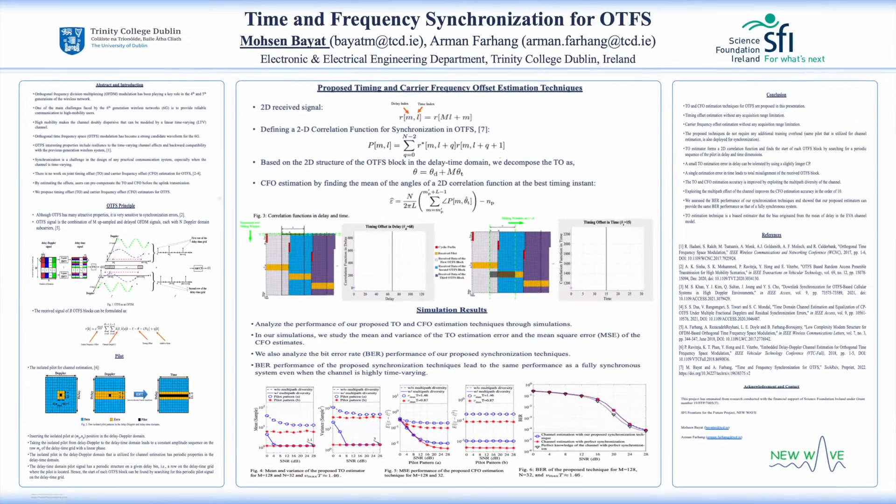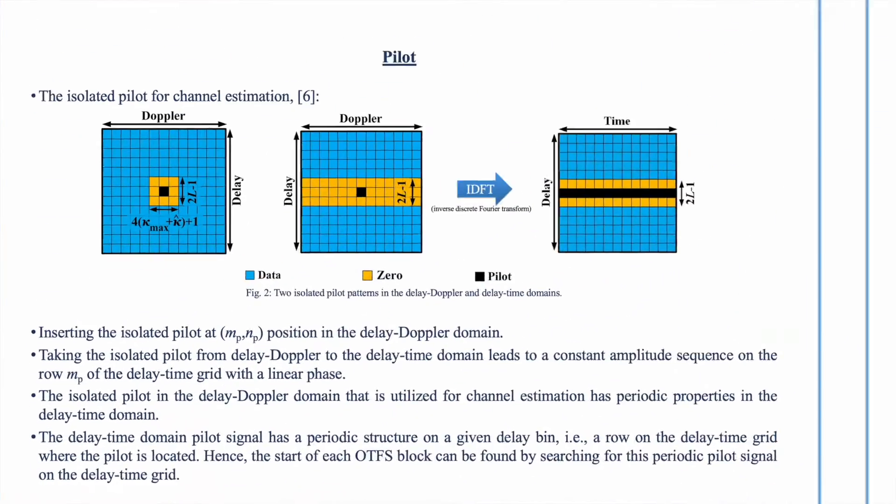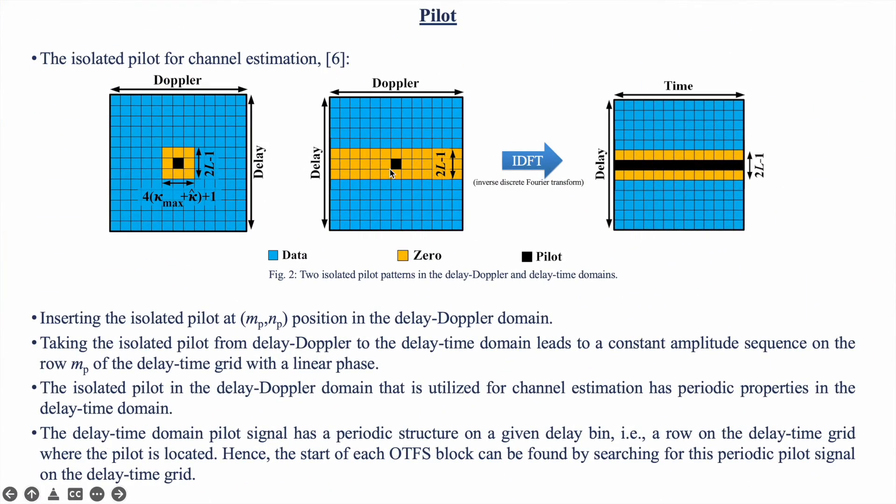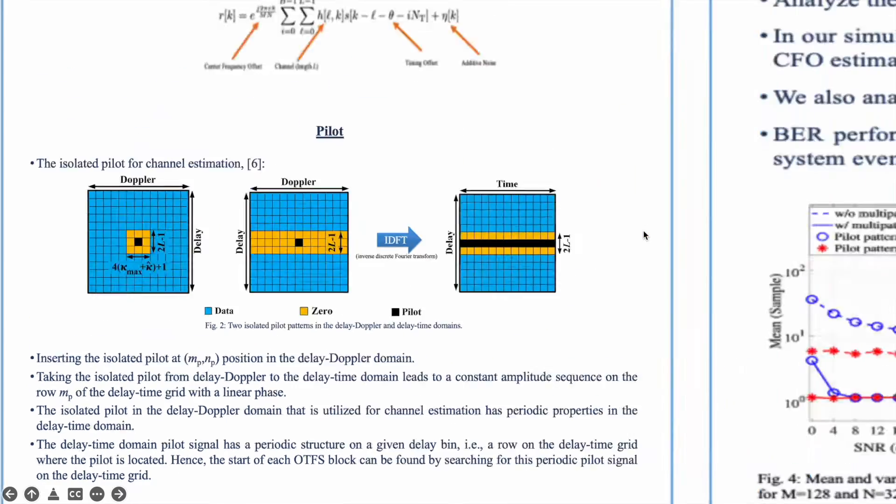We reuse the impulse pilot of channel estimation for synchronization. This impulse pilot is surrounded by zero guards and thanks to the periodic properties of this pilot in delay time domain, we only need to look for this periodic signal at the receiver side for estimating the starting point of the received OTFS block.